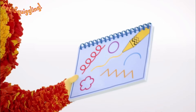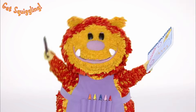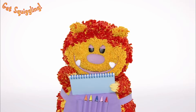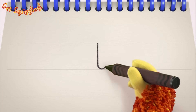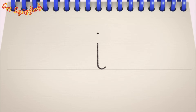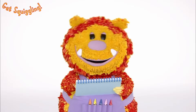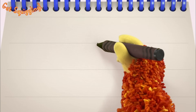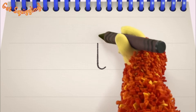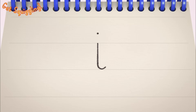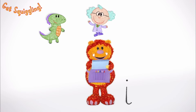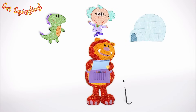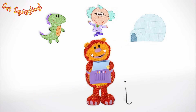Have you got your squiggle pads and squiggle sticks ready? Let's get squiggling! Holding your squiggle stick like this, move it down and flick and dot — the letter I! Let's squiggle it again: go down and flick and dot — the letter I! Shall we squiggle some things that start with the letter I? An iguana, an inventor and an igloo — they all begin with the letter I.